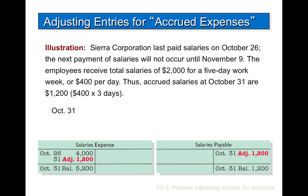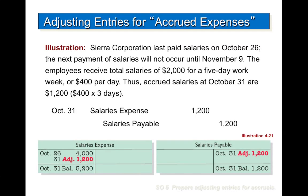Sierra Corporation last paid salaries on October 26 and the next payment will not occur until November 9th. Employees receive total salaries of $2,000 for a five-day work week, or $400 per day. Thus accrued salaries on October 31 are $1,200 ($400 times 3 days). The journal entry is to debit salaries expense and credit salaries payable for $1,200. In the T-accounts, ADJ is noted so we know it is the adjusting entry — debit for salaries expense, credit for salaries payable.